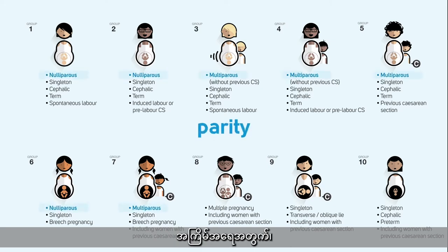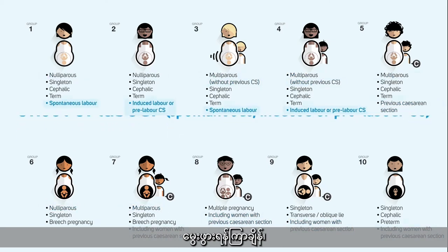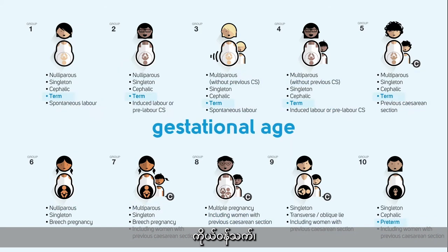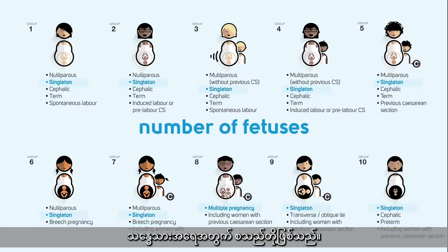These characteristics are: parity, previous cesarean section, onset of labor, gestational age, fetal presentation, lie, and number of fetuses.